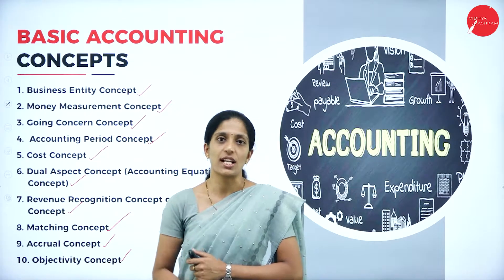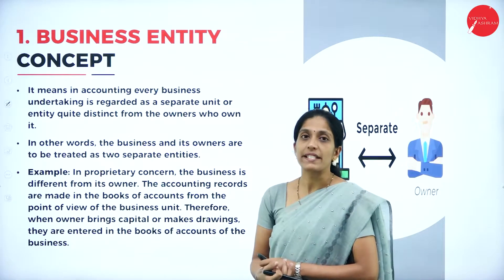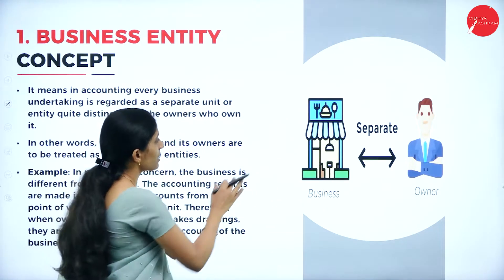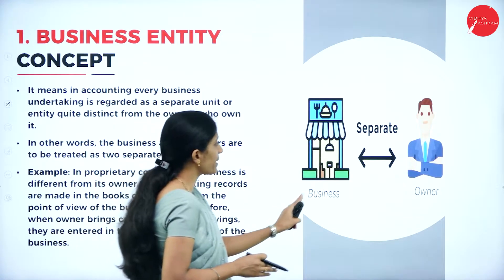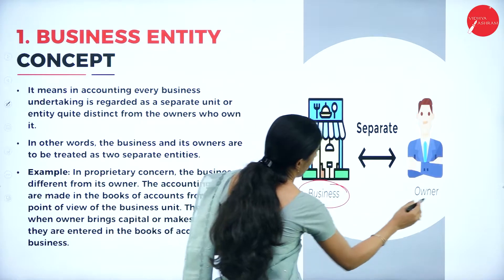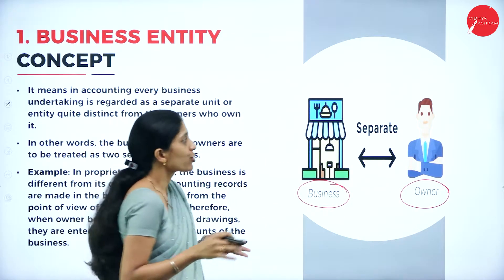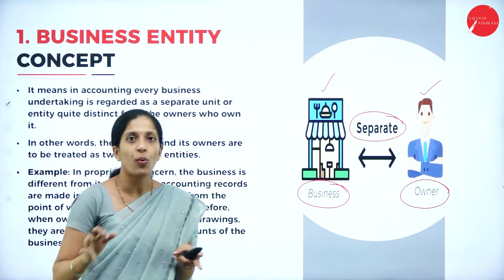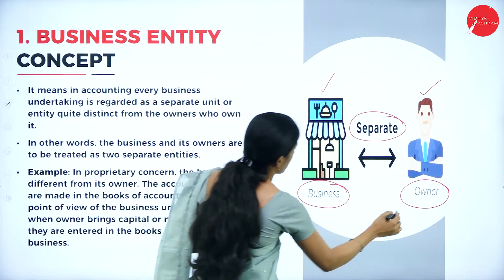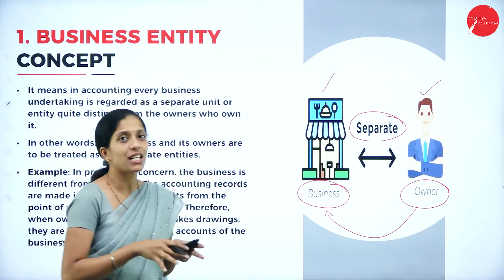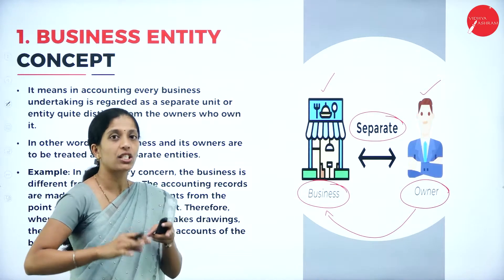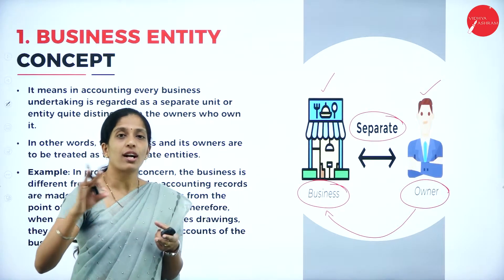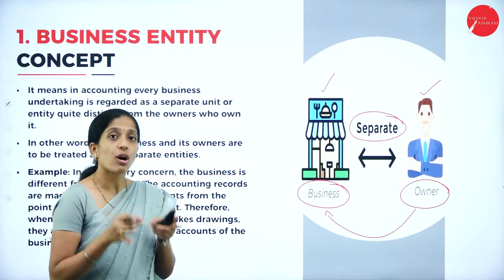The first concept is the business entity concept. Looking at the picture, this is the business and this is the owner. This concept tells that business and owner are not one and the same — they are two separate entities. Whatever amount is invested by the owner into the business becomes the business's capital. Whatever profit is earned in the organization belongs to the organization, not the owner.